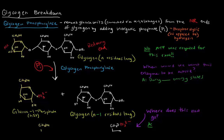And we get glucose 1-phosphate. And the glycogen chain is now n minus 1 residues long. It's one glucose unit shorter.